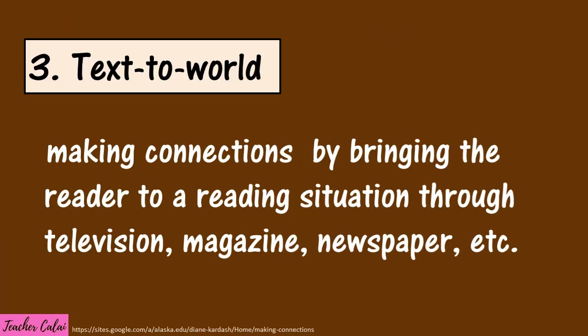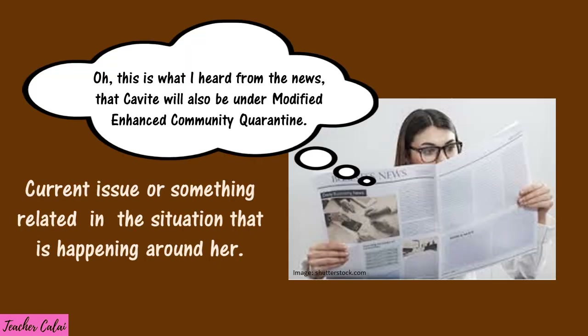Text-to-world makes connections by bringing the reader to a reading situation through television, magazine, newspaper, and so on. Example: 'Oh, this is what I heard from the news — that Cavite will also be under Modified Enhanced Community Quarantine.' The reader is connected through a current issue or something related to the situation happening around her.